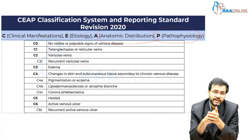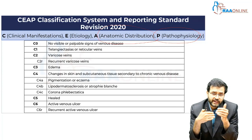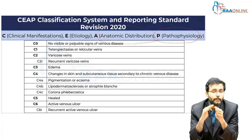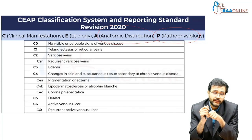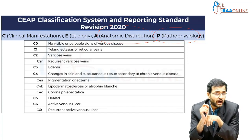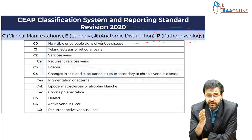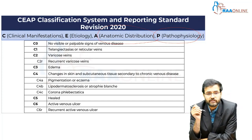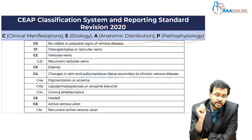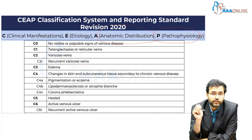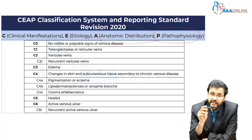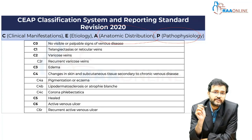Based on clinical manifestation, venous diseases of the lower limb are categorized as: C0 — no visible or palpable sign of venous disease; C1 — telangiectasia or reticular veins; C2 — varicose veins; C2R — recurrent varicose veins; C3 — edema; C4 — skin and subcutaneous tissue changes secondary to chronic venous disease; C4A — pigmentation or eczema; C4B — lipodermatosclerosis or atrophie blanche; C4C — corona phlebectatica; C5 — healed ulcer; C6 — active venous ulcer; and C6R — recurrent active venous ulcer.